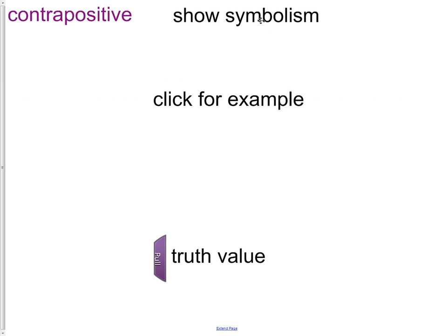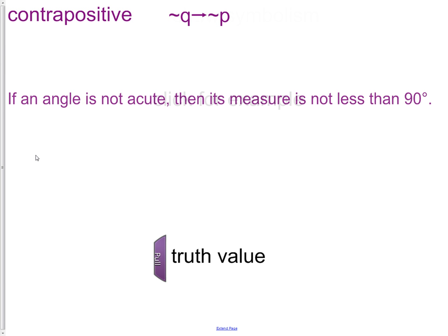The contrapositive. Here we do both things. Notice the Q statement is first, the P statement is second, and they both have been negated. For this, we switch them both, front and back. So now the hypothesis is at the end and the conclusion is at the beginning, and they both have been negated. If an angle is not acute, then its measure is not less than 90. This would be true.